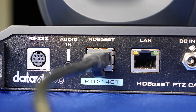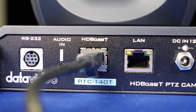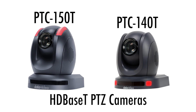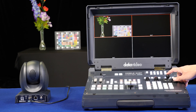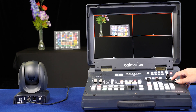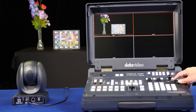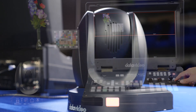If you have DataVideo HDBase-T cameras like the PTC-150T or PTC-140T, all you need to do is run a cat 6 cable from the cameras to the HS1500 or 1600T, and you'll have full camera control in addition to video signal and power.